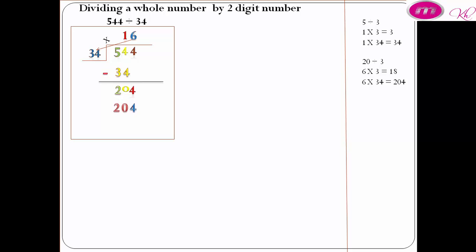6 times 34 equals 204. 204 minus 204 equals 0.